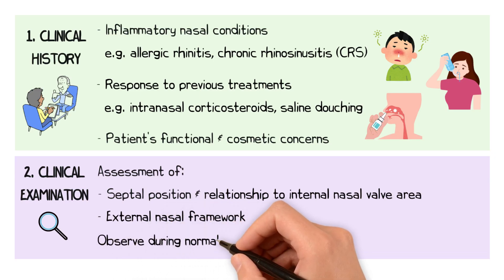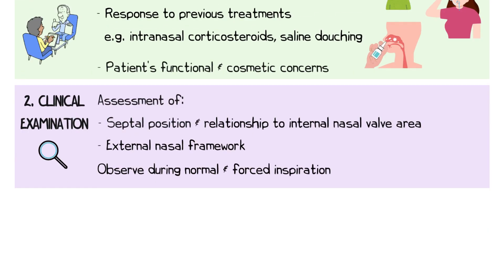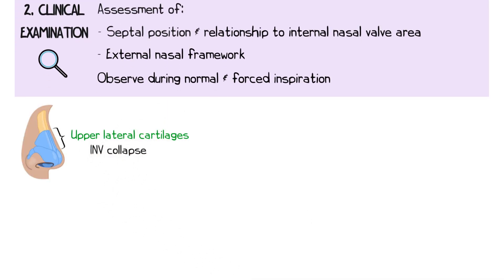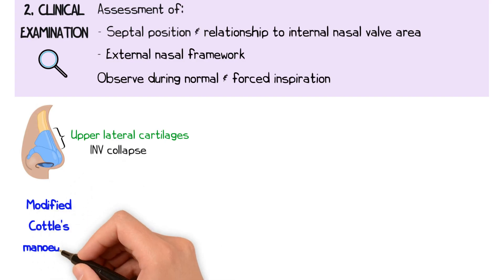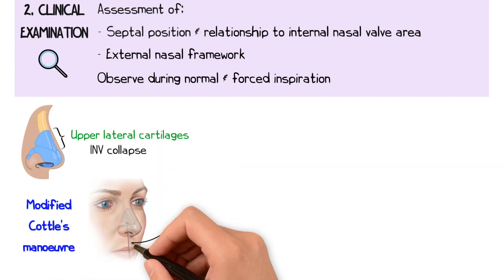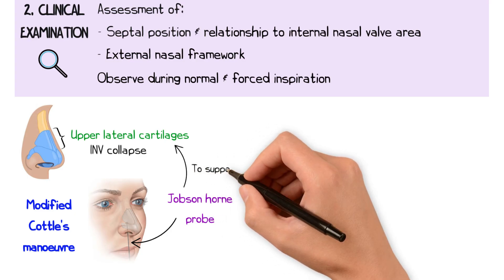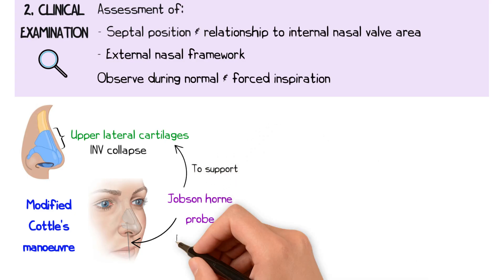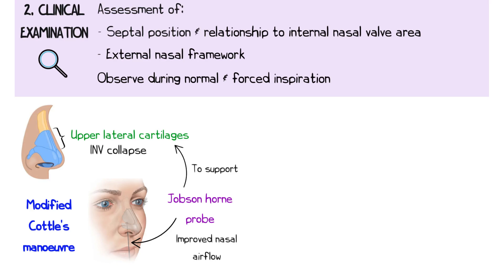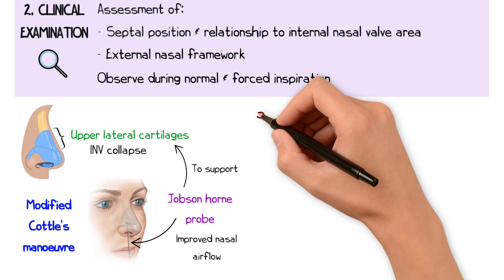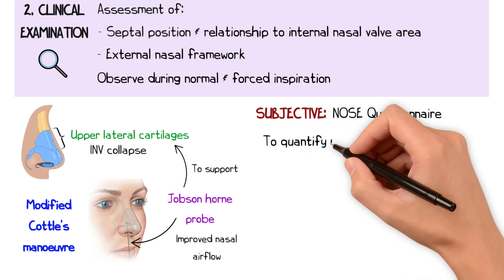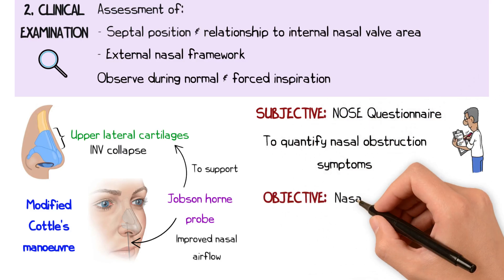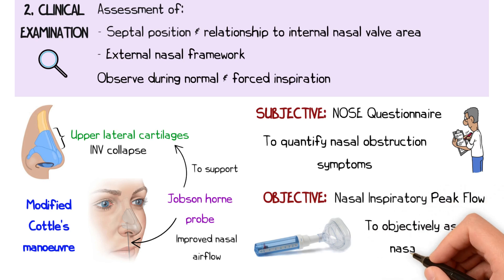The patient should be observed during normal and forced inspiration, paying particular attention to the upper lateral cartilage area and looking for internal nasal valve collapse. If this is seen, a modified Cottle's manoeuvre should be performed, placing a Jobson-Horn probe to support the upper lateral cartilages. This prevents internal nasal valve collapse and may correspond to improved nasal airflow for the patient. Assessment can be complemented by subjective data, such as the NOSE questionnaire to quantify nasal obstruction symptoms, or objective data such as nasal inspiratory peak flow to objectively assess nasal airflow.